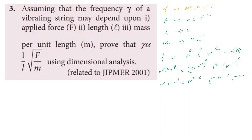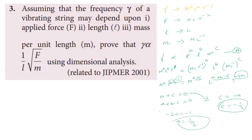Equating left-hand side and right-hand side dimensions: for mass, A + C = 0; for length, A + B - C = 0; for time, -2A = -1, so A = 1/2. From A + C = 0, C = -1/2. Substituting into the length equation: 1/2 + B - (-1/2) = 0, giving B = -1. So A = 1/2, B = -1, C = -1/2.